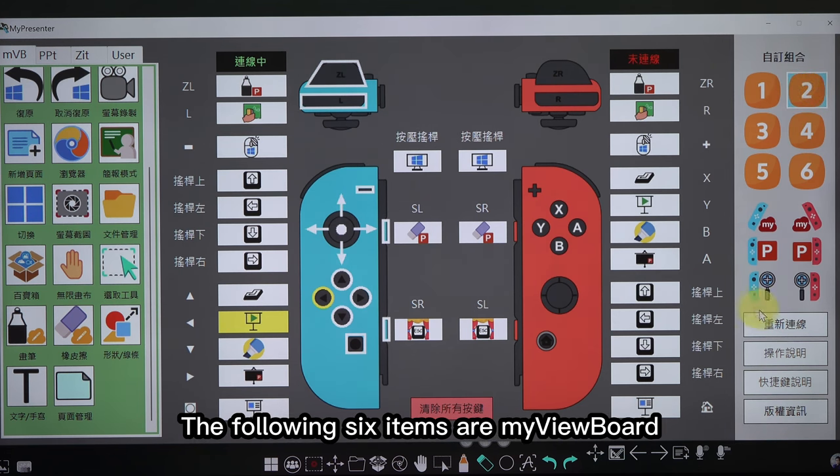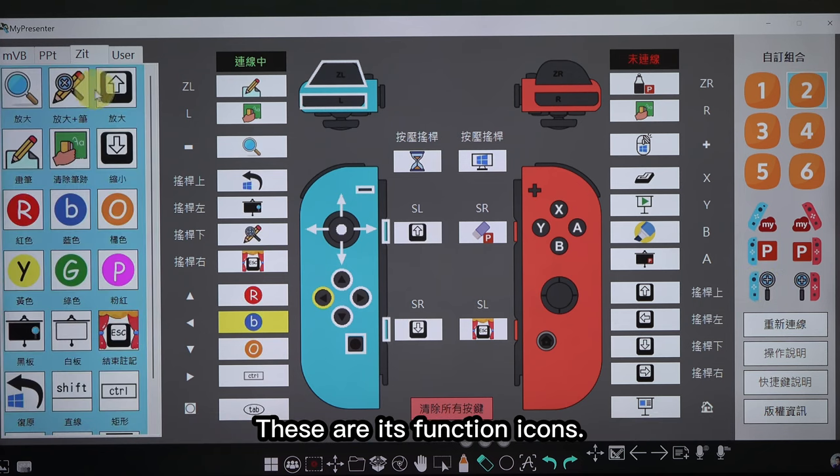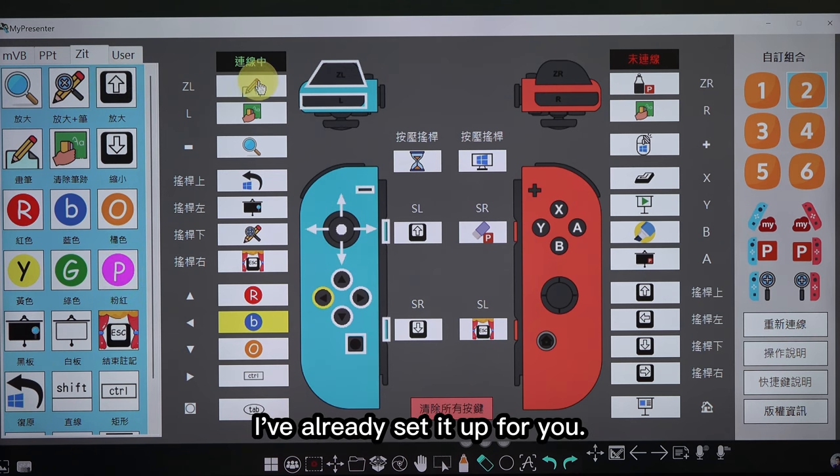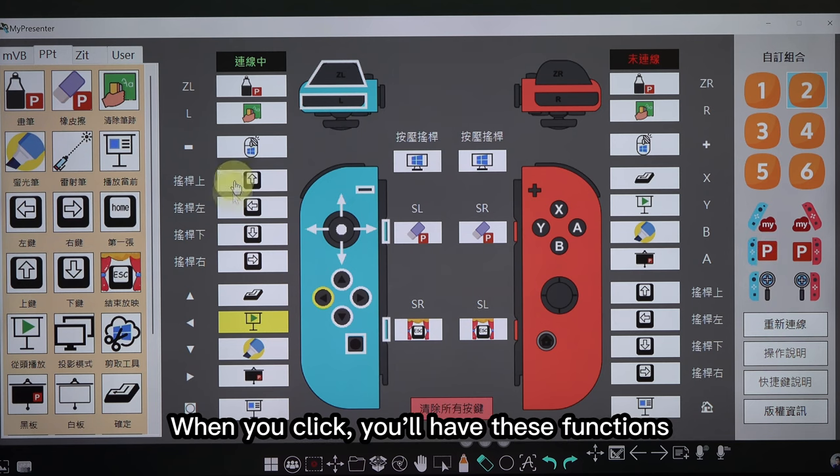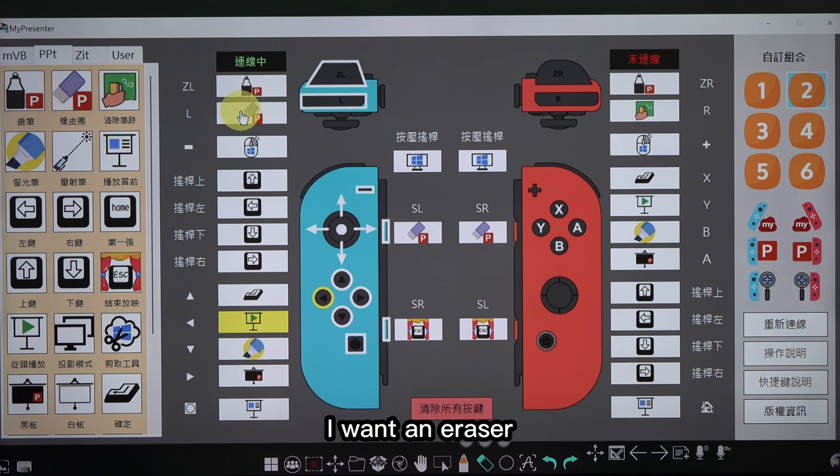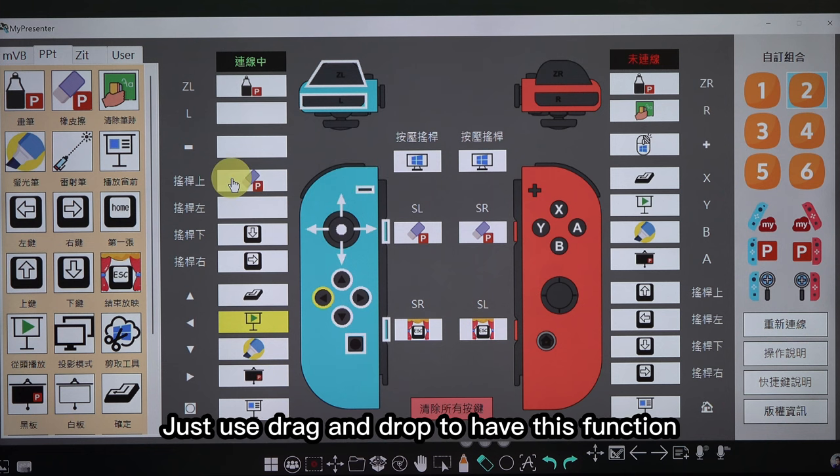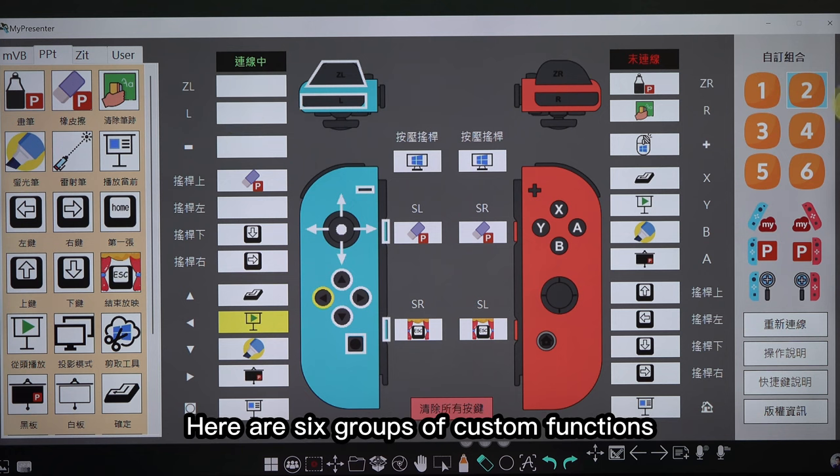The following six items are My View Board, PPT, and Zoom it that many teachers like to use in class. We all have preset function. These are its function icon. I've already set it up for you, you can use mine first. Okay, you just click PowerPoint. When you click, you'll have these function. Of course you can change, I want an eraser, I don't want this, it will be alright. Where my eraser wants to move here, just use drag and drop to have this function.